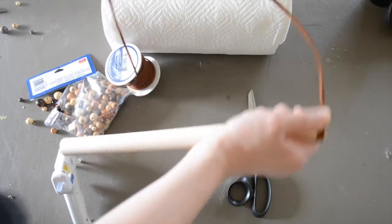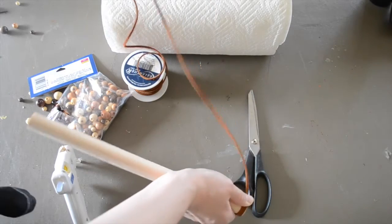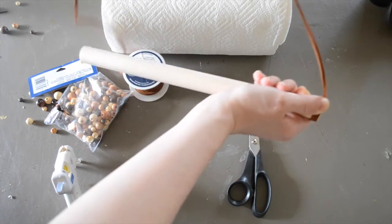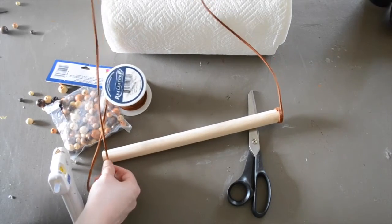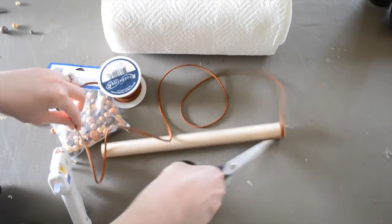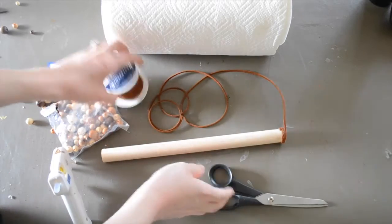Now you want to measure up how high you want your paper towel to hang. So I'm going to go up about two feet on either side. And then we're going to go ahead and cut our leather cord.